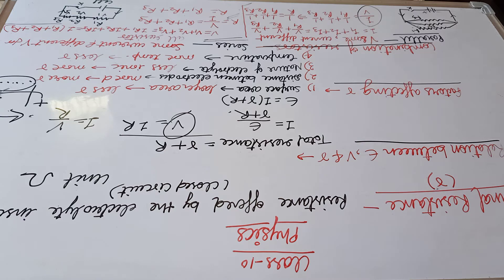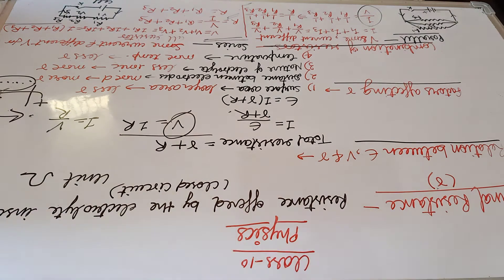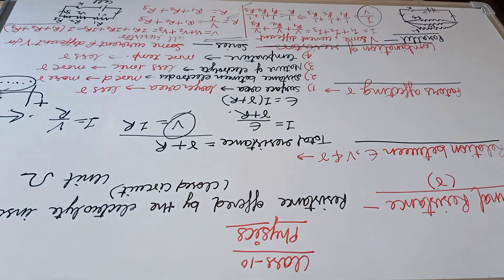Next we have the relation between EMF, potential difference, and internal resistance. EMF is represented by the letter epsilon. Internal resistance is small r, and the potential difference or terminal voltage is V. We know that V equals IR, or I equals V by R.